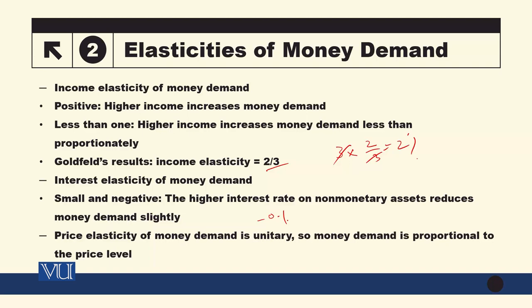Percentage point and percent are two different things. If the interest rate goes from 5% to 6%, that is a 1 percentage point increase — but not a 1% increase. To calculate the percentage increase: (6 − 5) / 5 = 1/5 = 0.2, which is a 20% increase. So if you want to find the impact on money demand when the interest rate goes from 5% to 6%, you multiply 20% by the elasticity of 0.1, giving a 2% decrease in money demand.